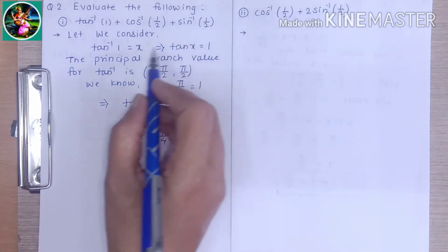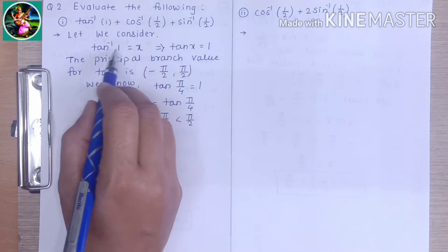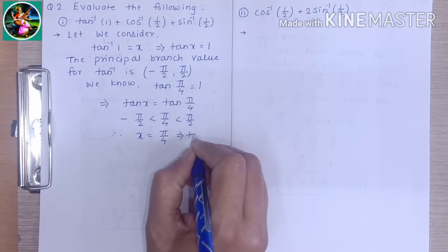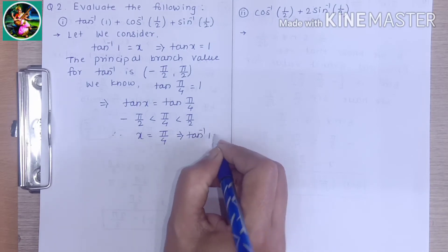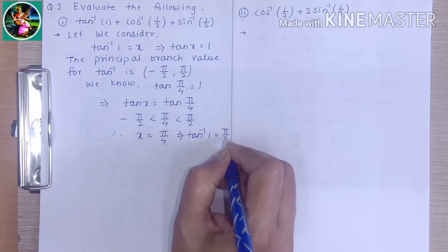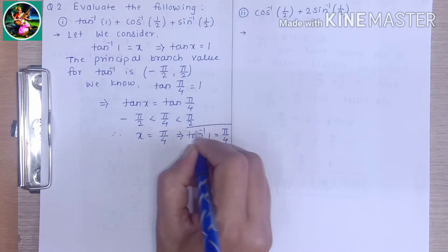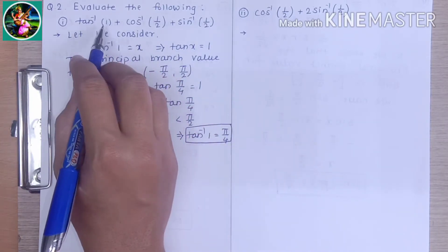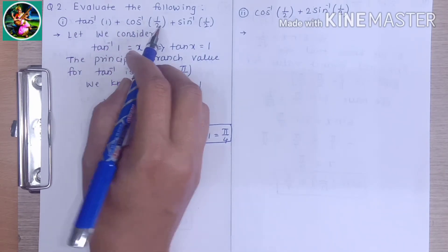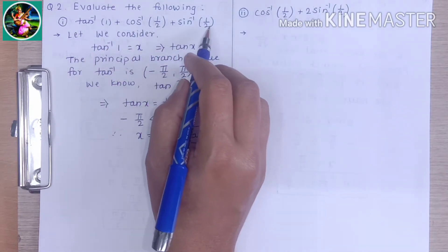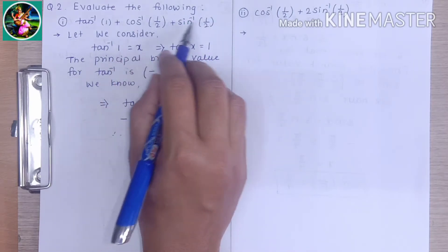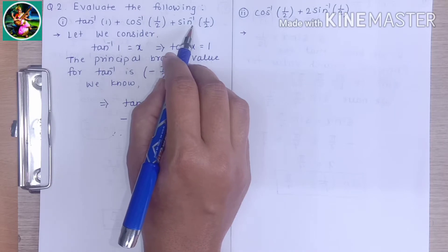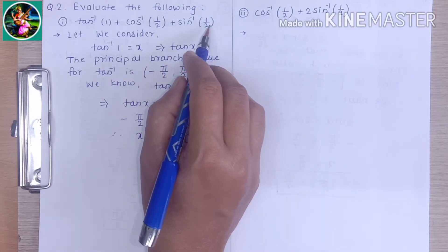Resubstituting the value for x, that is tan inverse of 1, we get tan inverse of 1 is equal to π/4. Now we have to calculate tan inverse 1 plus cos inverse of 1/2 plus sin inverse of 1/2. We know the property that cos inverse of x plus sin inverse of x is equal to π/2.